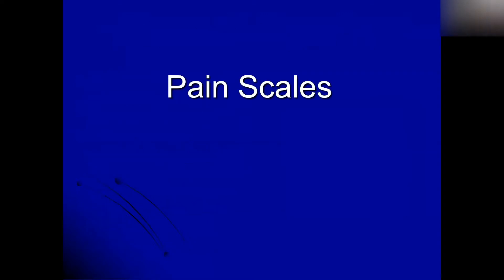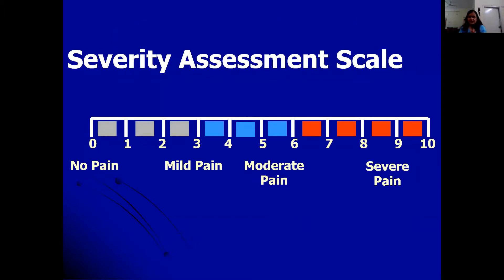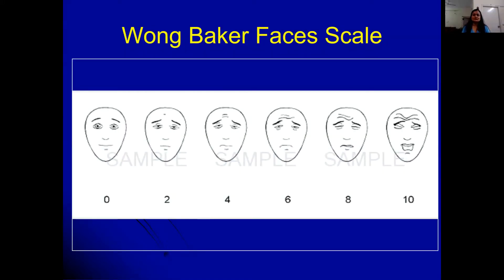Severity of pain can be measured using various scales. The numerical rating scale uses zero to ten, where zero means no pain and ten means maximum imaginable pain. If a patient doesn't understand numbers, a categorical scale — mild, moderate, severe, very severe — can be used. For children, the Wong-Baker Faces Scale is used, asking the child to point to the face that matches how they feel.